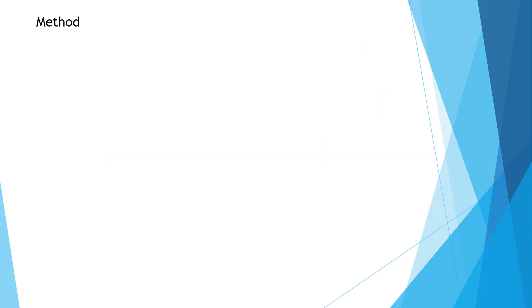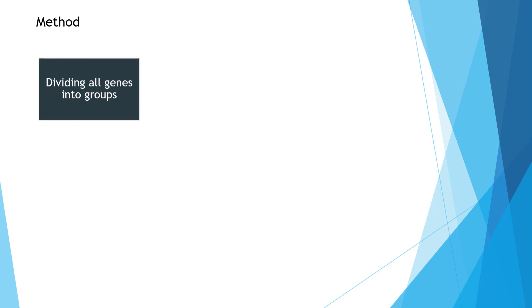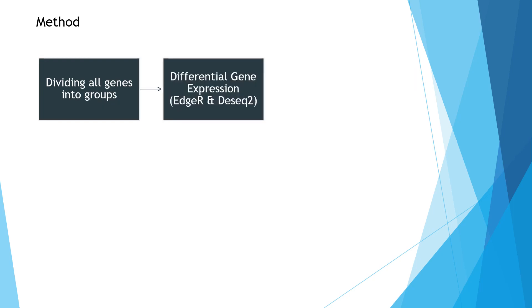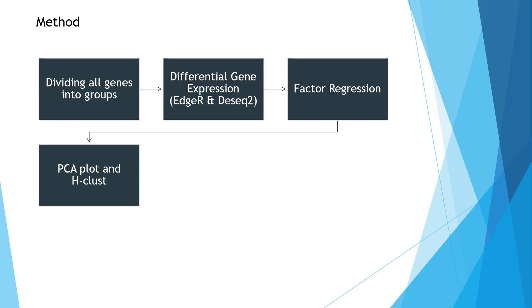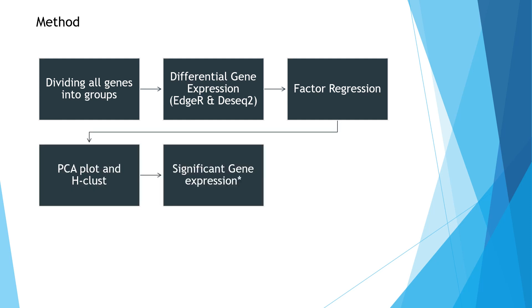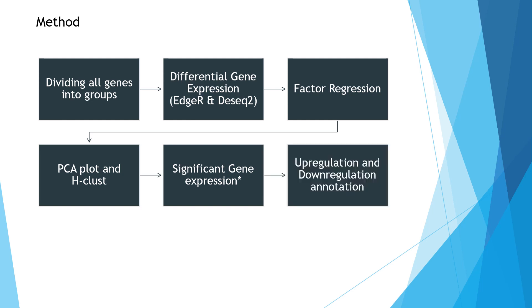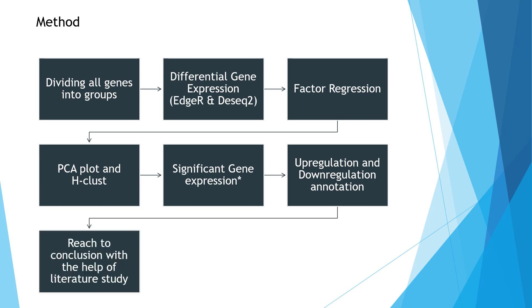Here we are going to talk about the method we followed. We divided genes into groups so that we could perform differential gene expression, factor regression, and PCA plots in each class for visualization purposes. We found out the genes which are significantly expressed, then identified the up- and down-regulated ones, which helped us reach conclusions with the support of literature.